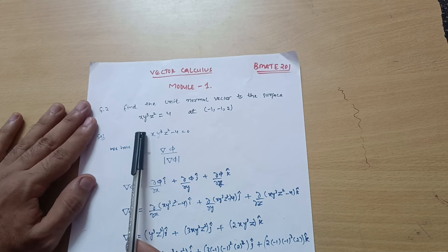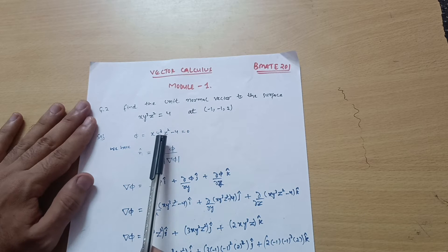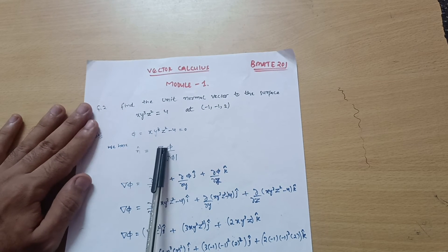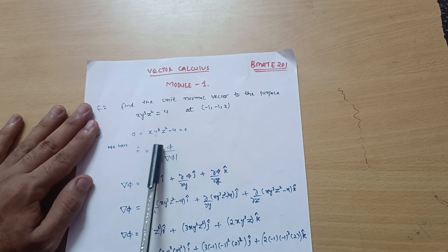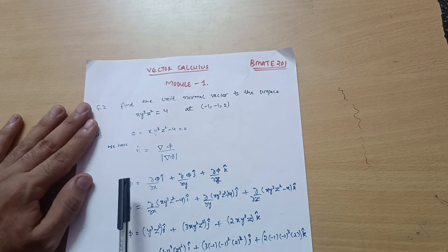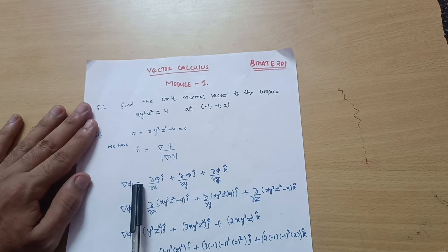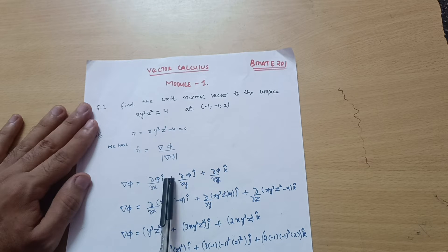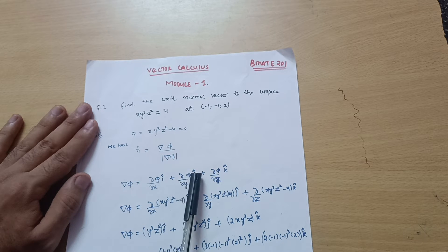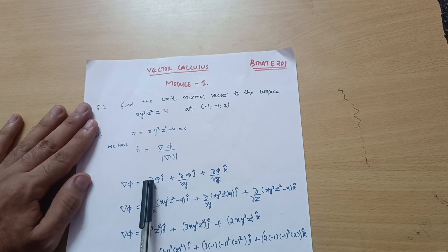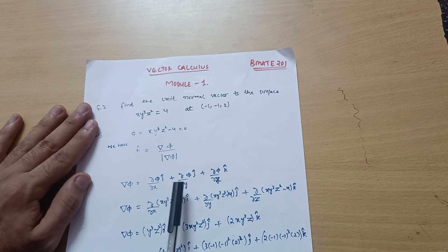When we combine the del operator (differential operator) with φ, it becomes a vector quantity called grad φ, also written as ∇φ. The formula is: ∇φ = (∂φ/∂x) î + (∂φ/∂y) ĵ + (∂φ/∂z) k̂, where î, ĵ, k̂ are the unit vectors.